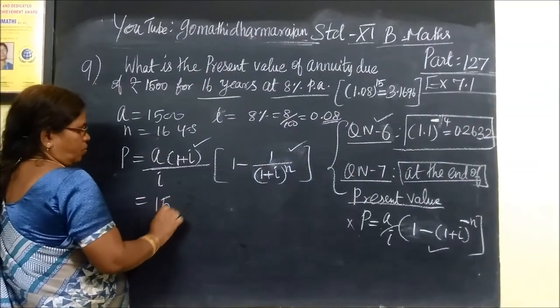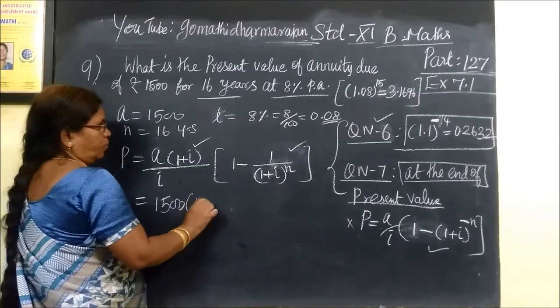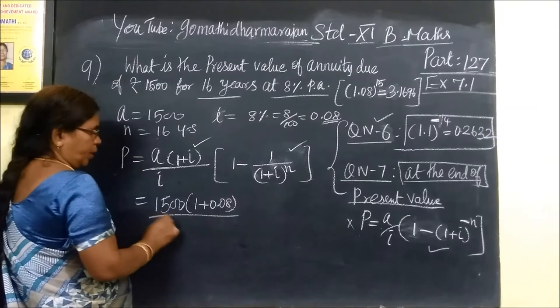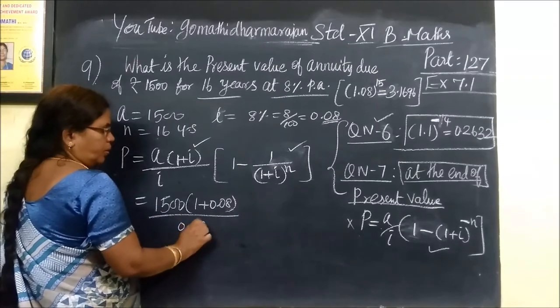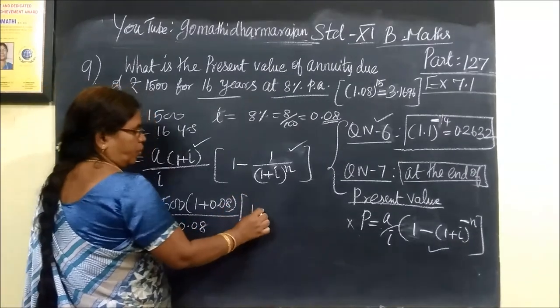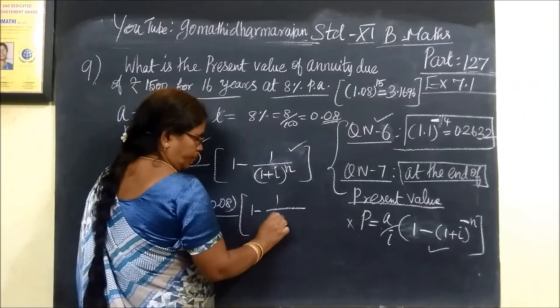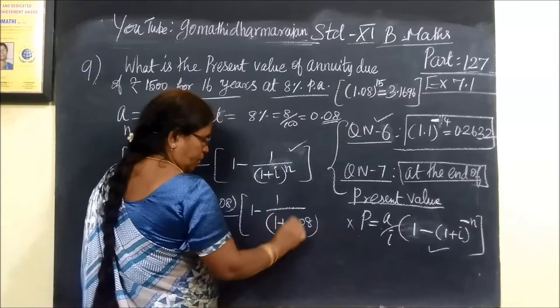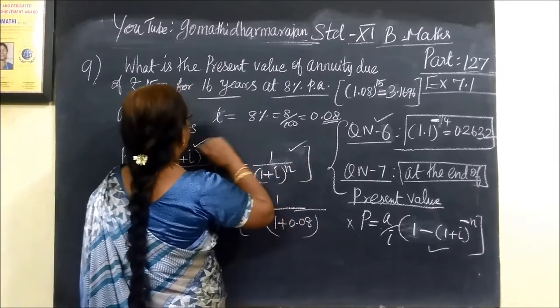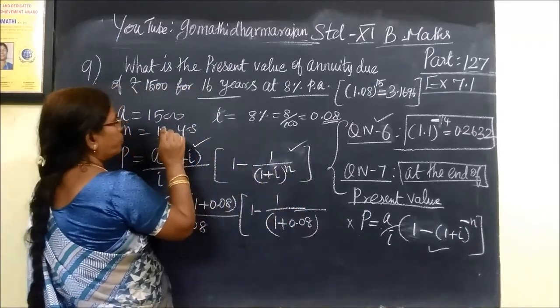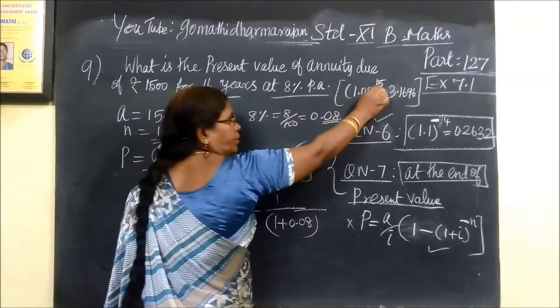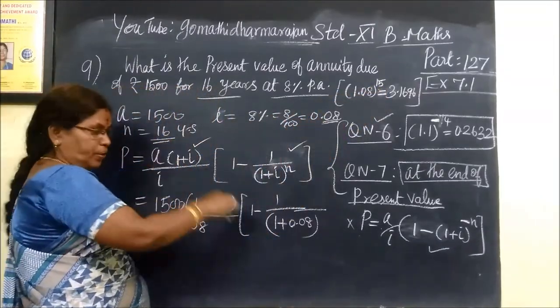A equal to 1500, 1 plus 0.08, 1 by 0.08, 1 minus 1 by 1 plus 0.08, all over the end. N equal to 16 years. In this case, 15 years, 16 years.